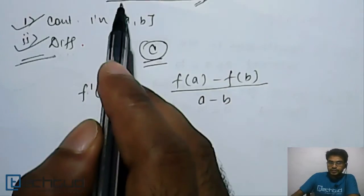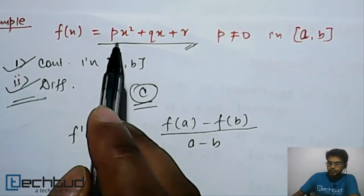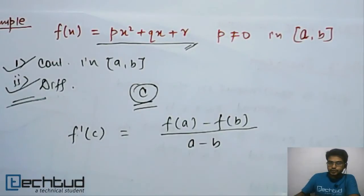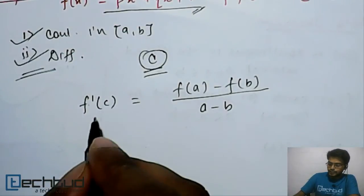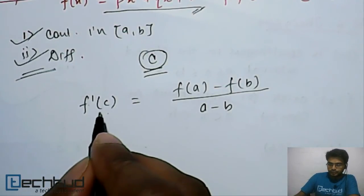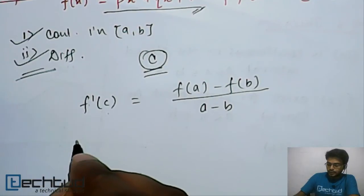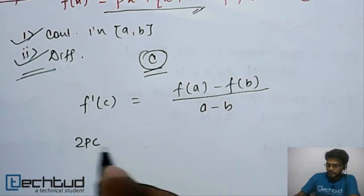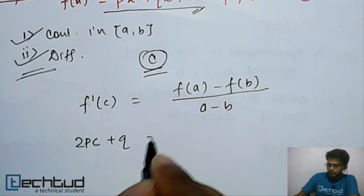If we differentiate this function, it will be 2px + q, right. So once we, after differentiating, put the value of c, that will become 2pc + q equal to...